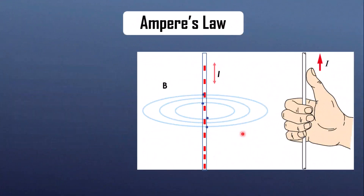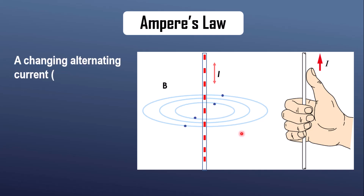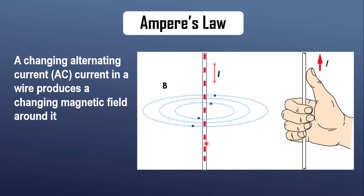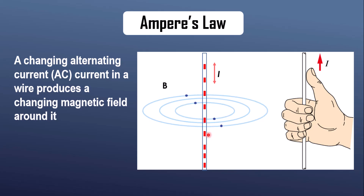Now, let's see what happens when AC current flows through the same wire. When an alternating current flows through a straight conductor like a wire, it continuously changes direction in magnitude with time, usually in a sinusoidal pattern. This changing current generates a changing magnetic field around the wire.